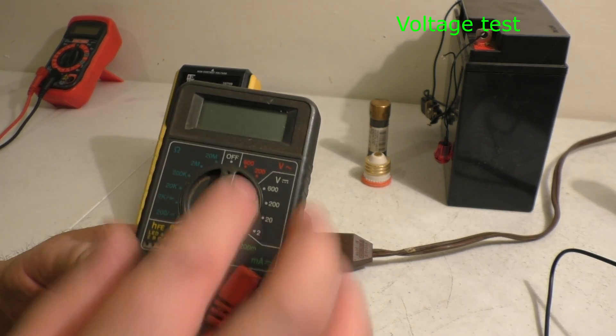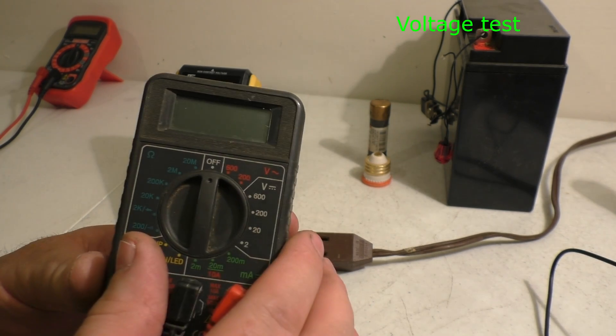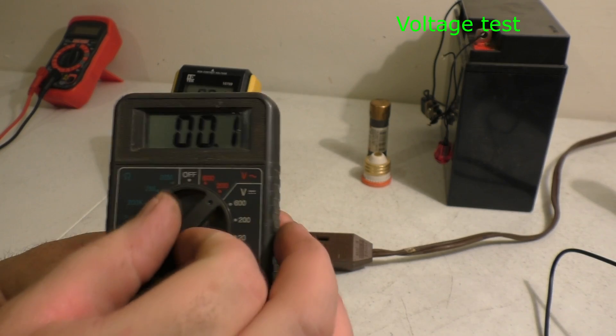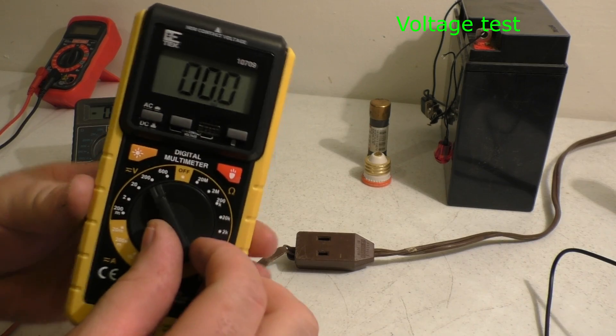You want to go to 200 for normal household current. On a cheap one like this one, same thing. The V with the squiggly line. You want to turn it to 200. This one here, you want to go up to 200 volts.